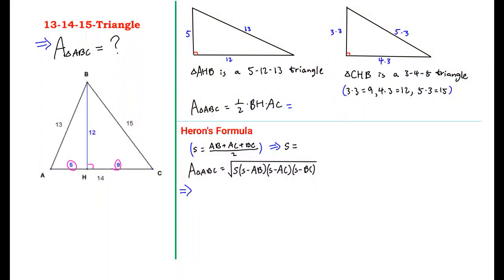This is the 13, 14, 15 triangle. Something interesting about this triangle is that when you extend from B onto line AC where it's perpendicular, line BH is equal to 12.